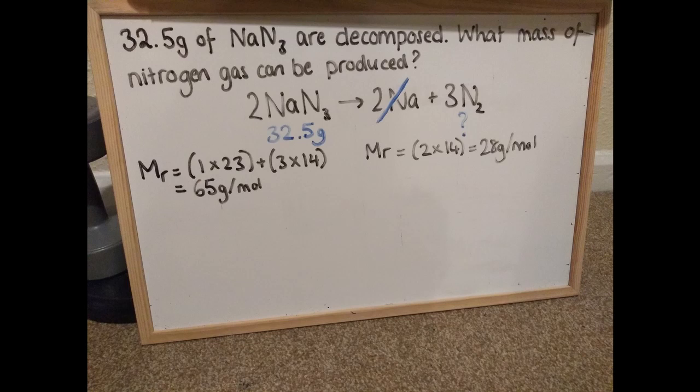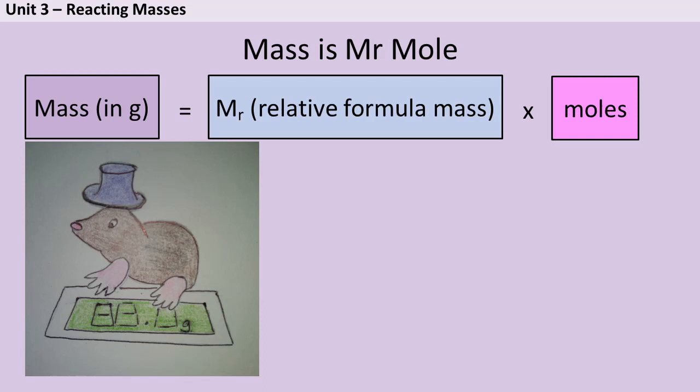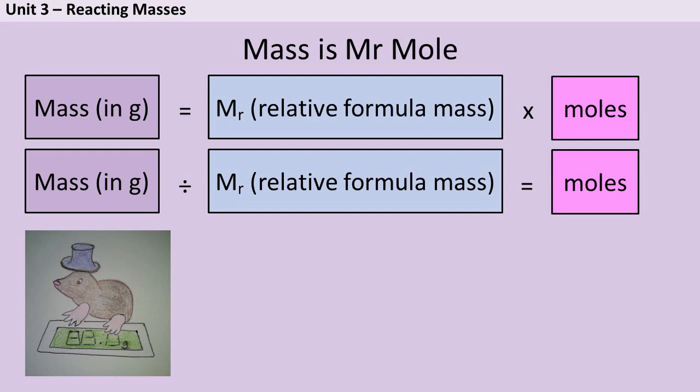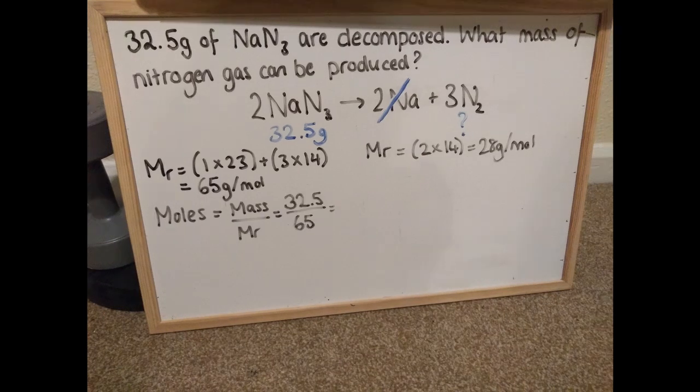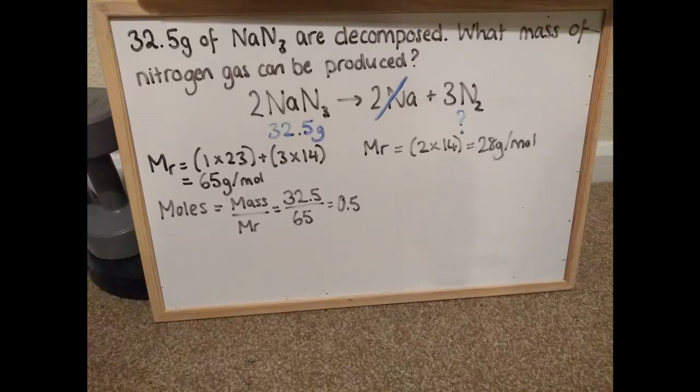So I know that one mole of sodium azide would weigh 65 grams and I know that I've got 32.5 grams. So now I need one of the only equations I need to remember in chemistry and that equation is mass is MR × mole, or in other words the total mass is MR, that's the relative formula mass, times by the number of moles I've got. Now if I rearrange that by dividing both sides by MR, what I'm left with is that the number of moles I've got is the mass, that's 32.5 grams, divided by the MR, the relative formula mass, which is 65 grams. And if I do 32.5 divided by 65, I find out that I have half a mole of sodium azide.